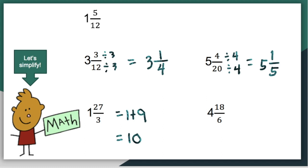And the last example: four and eighteen over six. Again, eighteen divided by six is a whole number which is equivalent to three. So three plus the whole number four will give us seven. So four and eighteen over six is equal to seven.